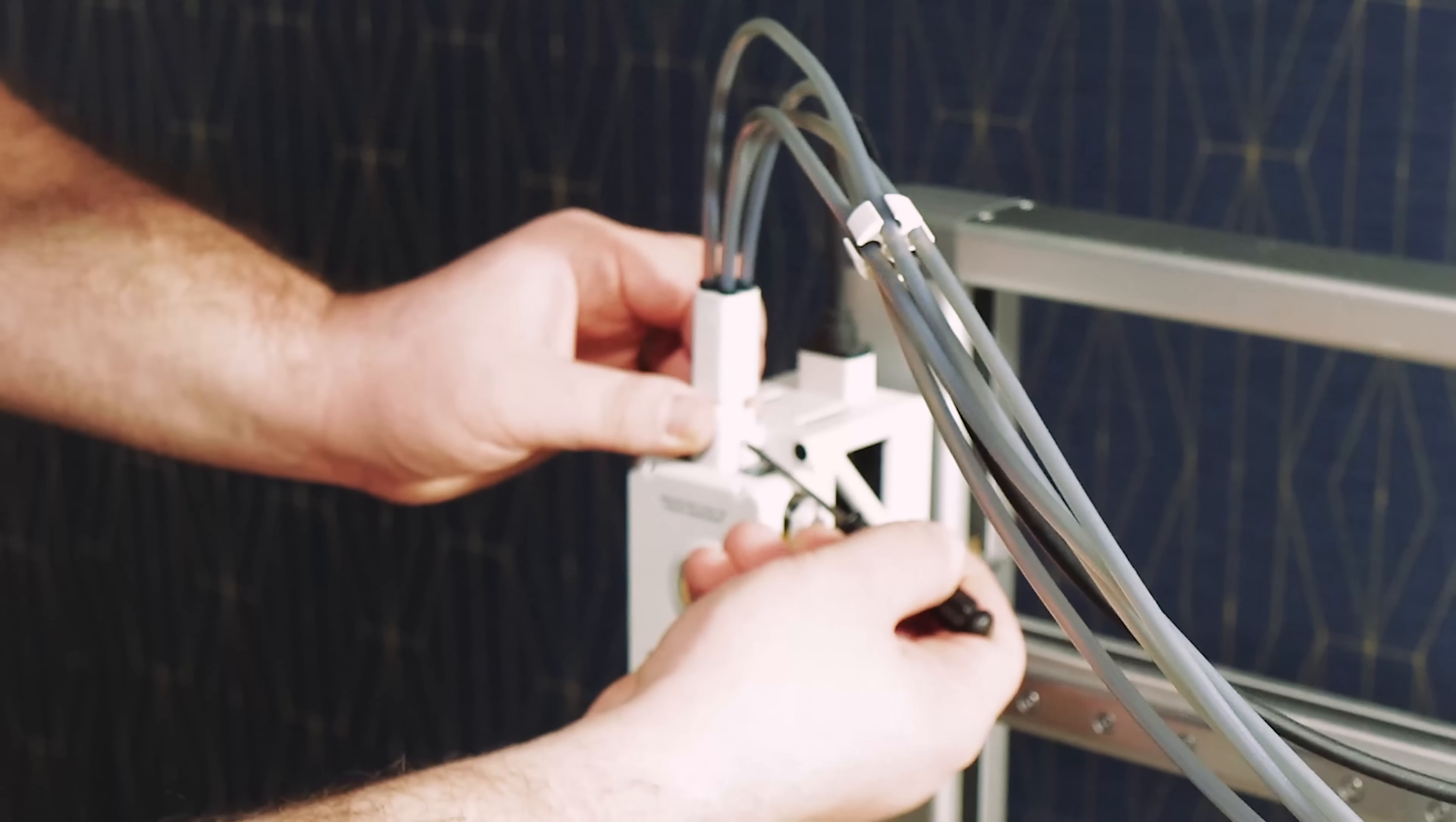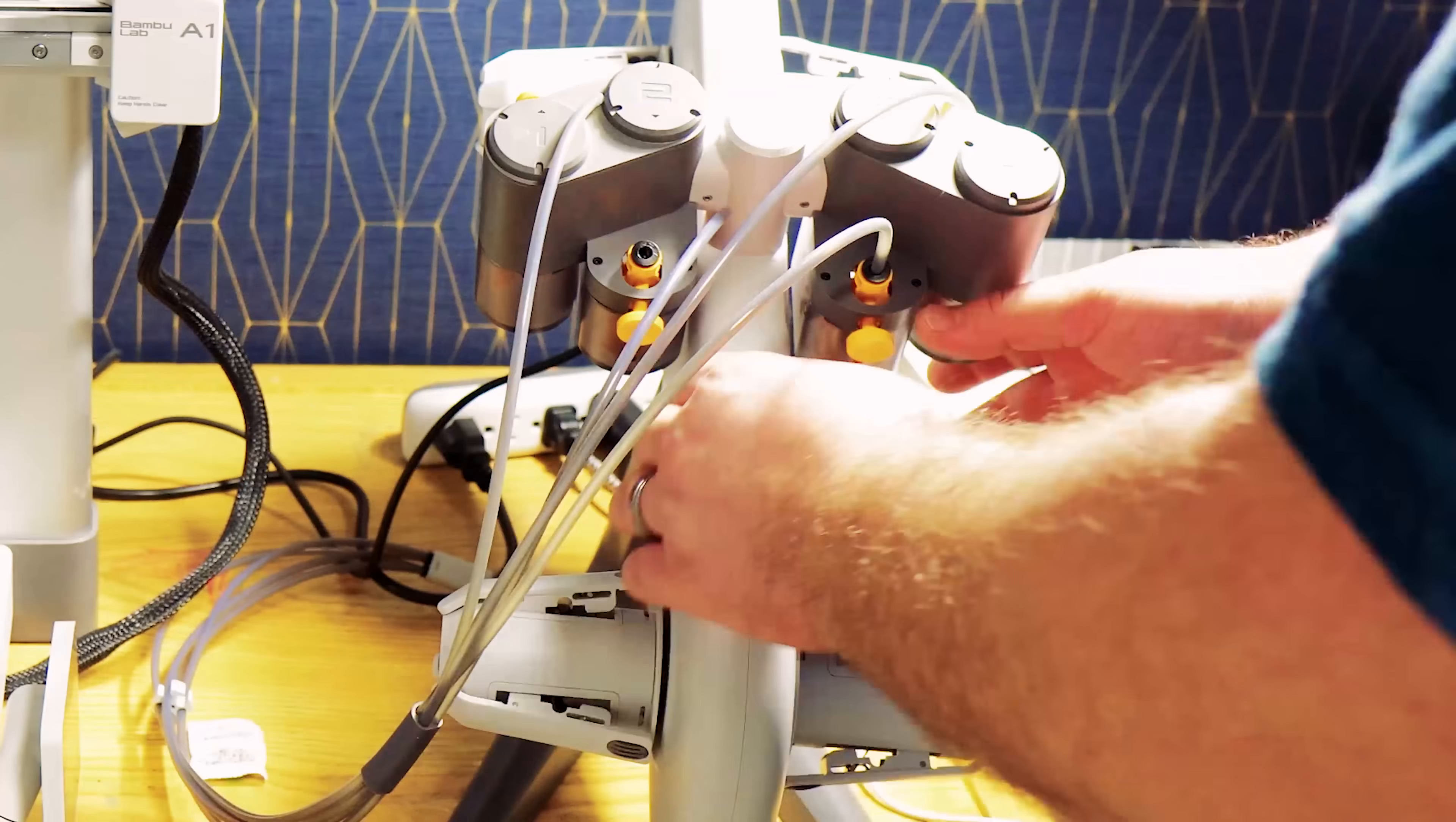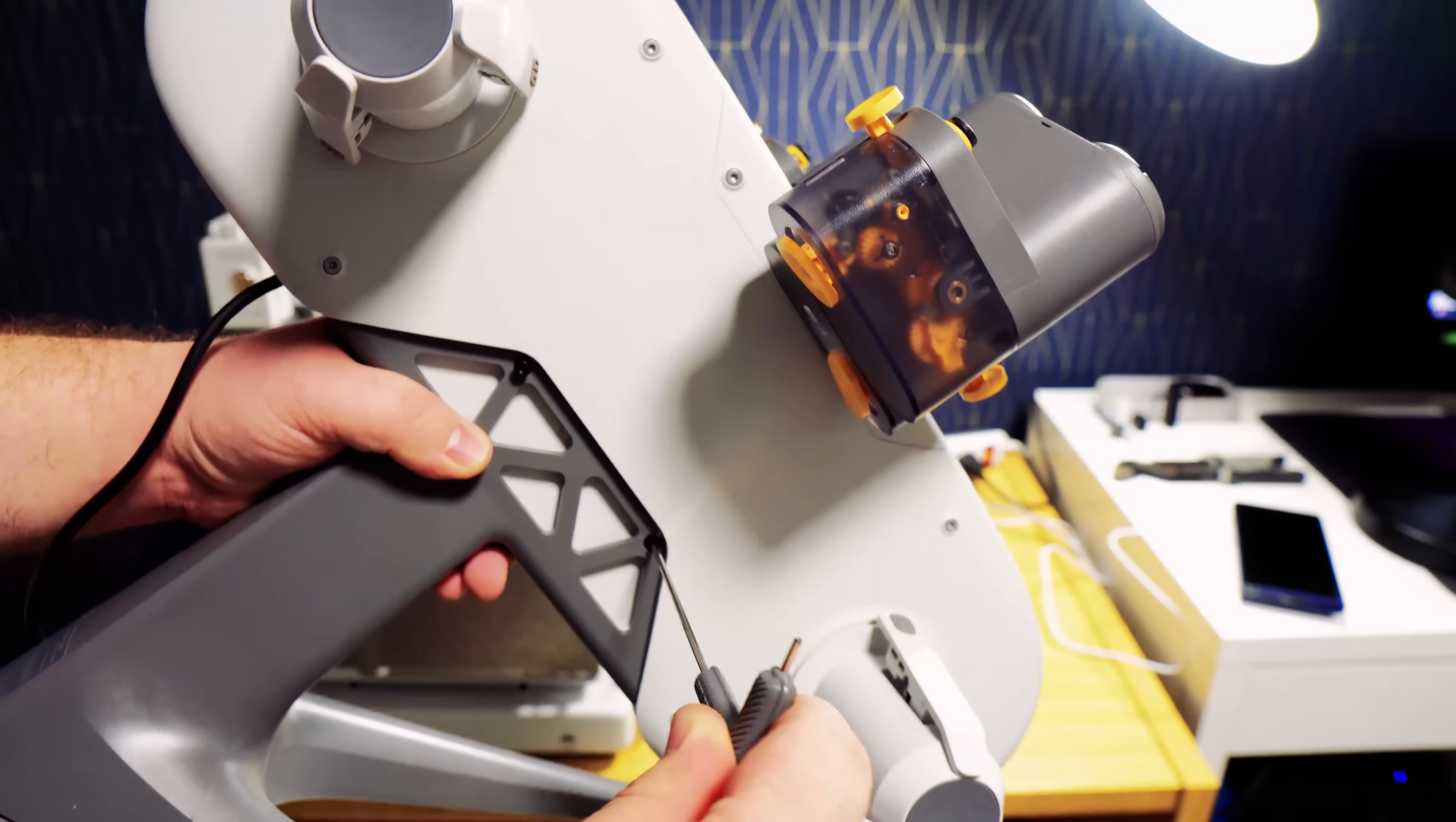Start by removing any spools from your AMS and removing AMS hub from your extruder. Remove the PTFE tubes from AMS and then don't forget to unplug AMS from your printer. Disassemble existing AMS stand.